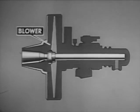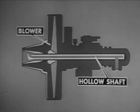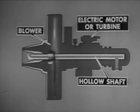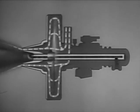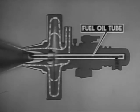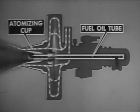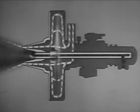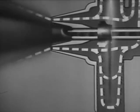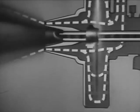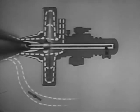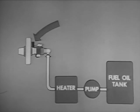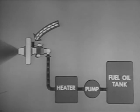In the rotary cup burner, a fan or blower is mounted on a hollow steel shaft. An electric motor or steam turbine turns the shaft and blower at high speed, providing a blast of air around the burner nozzle. The oil, under low pressure, enters through a stationary fuel oil tube inside the rotating hollow shaft and is discharged into the rotating atomizing cup. Centrifugal action forces the oil against the inner surface of the atomizing cup and causes the oil to leave the rim as a hollow cone. The meeting of the oil and the air from the blower further atomizes the oil. Additional air, needed for proper combustion, enters through an air door in the furnace wall. As in all burners, you control the firing rate by controlling the amount of fuel oil and air going to the burner.